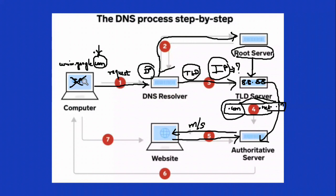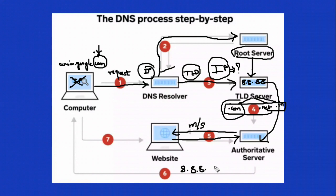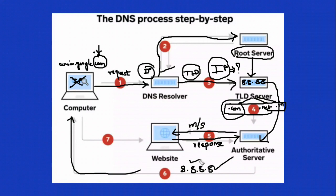So the next step is: if the IP address is correct, the authoritative name server will send it to the web browser. It will confirm that 8.8.8.8 is verified to be correct and that the right response has been obtained, and that is sent to the browser. Once the browser receives this IP address, we will be able to see the homepage of Google.